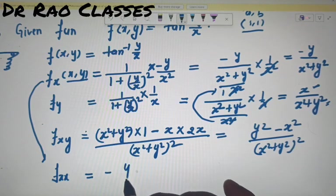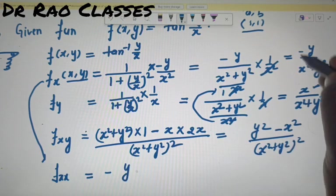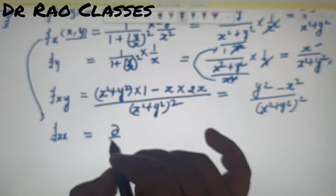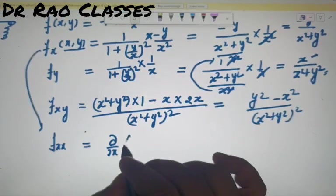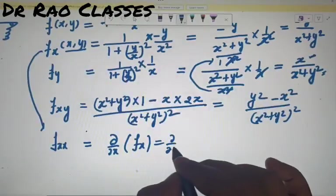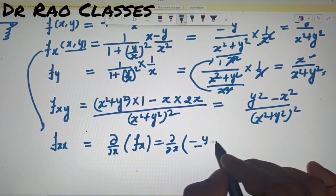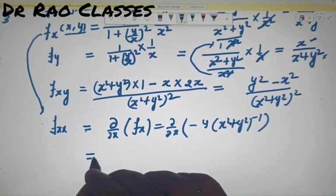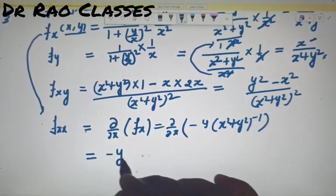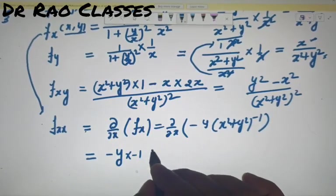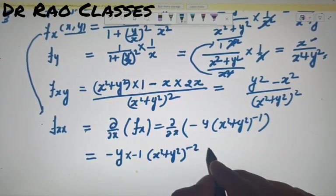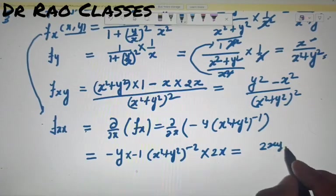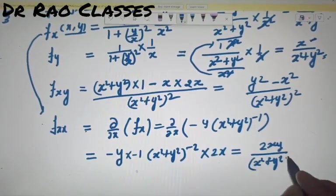f_xx के लिए: del/del_x of (-y/(x²+y²))। -y constant है। (x²+y²) की power -1 पर chain rule लगाएंगे: -y × (-1) × (x²+y²)^(-2) × 2x। तो f_xx = 2xy/(x²+y²)²।